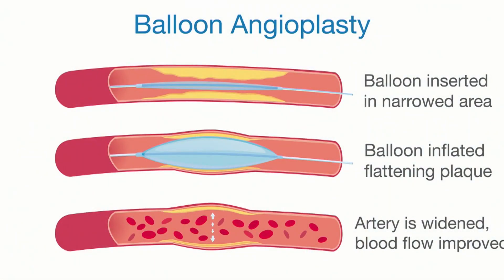When there's a blockage in an artery and blood flow is not reaching where it's supposed to go, you're going to have a problem. In a leg, you may develop an ulceration or gangrene. In the heart, you might develop angina and subsequently a myocardial infarct. Or in the carotid artery going to the brain, the lack of blood flow and shedding of particles from that plaque can produce a stroke.